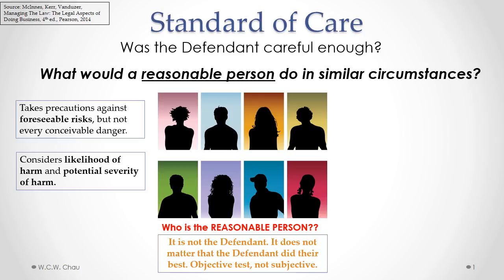A reasonable person would logically sit down and think: how likely is something wrong going to happen, and how severe will the consequences be. Another thing a reasonable person would do is adopt affordable precautions to prevent mishap, accidents, or injury. So a reasonable person does consider the cost — there is a cost-benefit analysis that a reasonable person would apply.